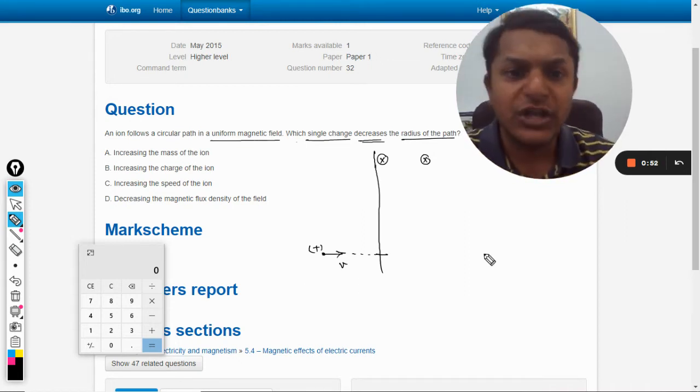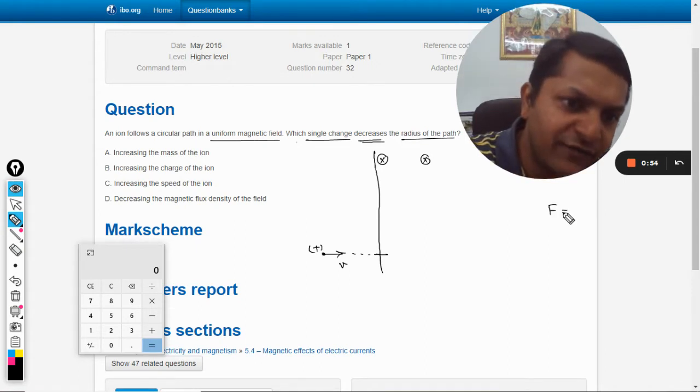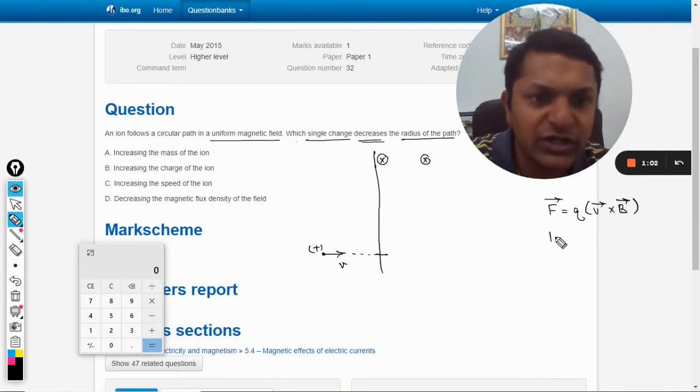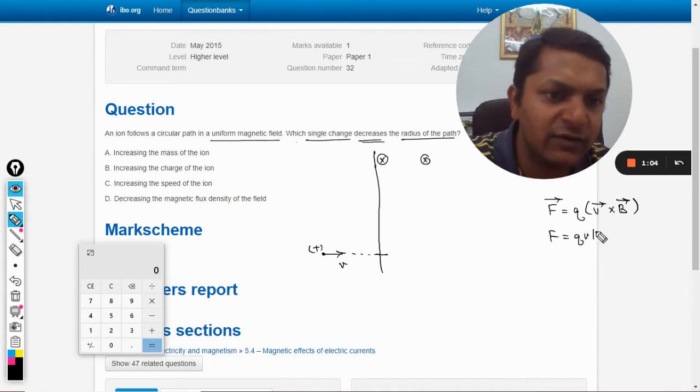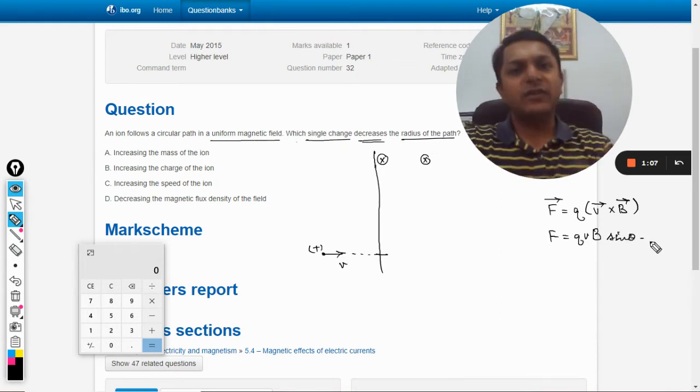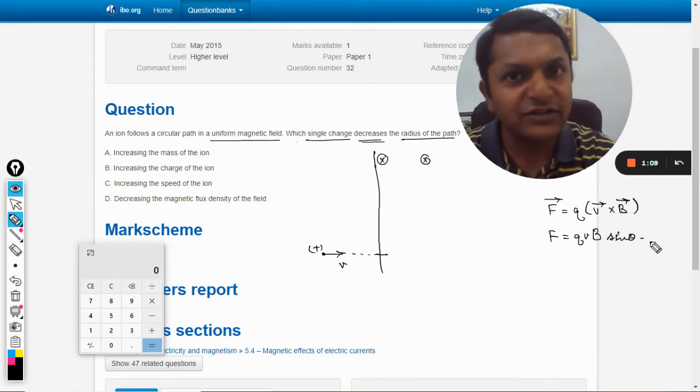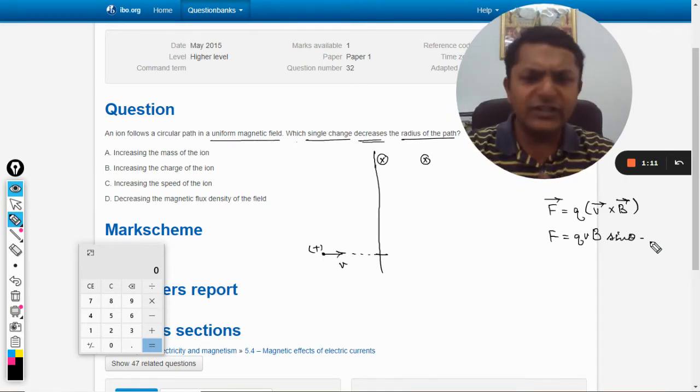The magnitude of that force is given by, if I talk in terms of vectors, v cross B. In scalar quantity it will be qvB sine theta, where theta is the angle between the velocity vector and the magnetic field, which in this case is 90 degrees.